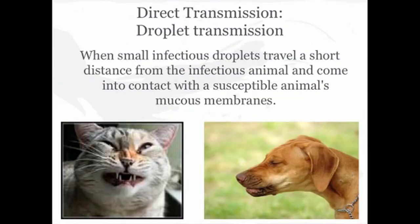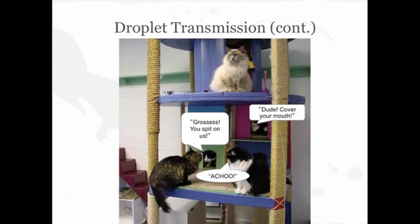Next, droplet transmission occurs when infectious droplets — which can be any sort of secretion, whether oral secretions like snot, feces that's been aerosolized, or urine — leave one animal's system and come into contact with the mucous membranes of another animal. An infectious animal that has just sneezed sprays infectious particles to animals within a few feet of him. Importantly, when he sneezed, he also exposed the environment — which is another mode of disease transmission: indirect transmission.